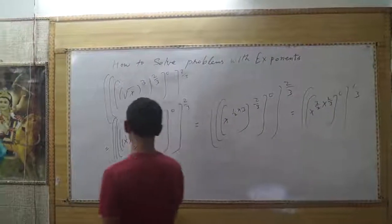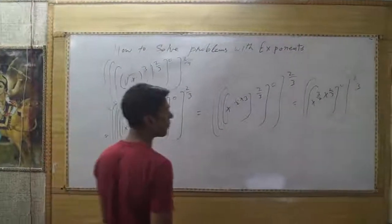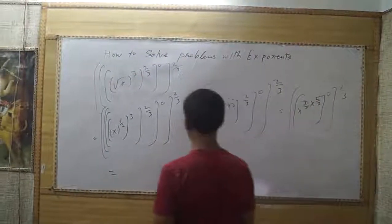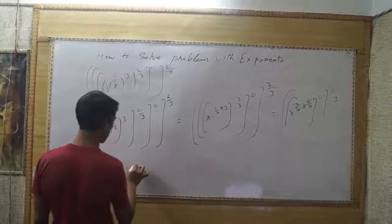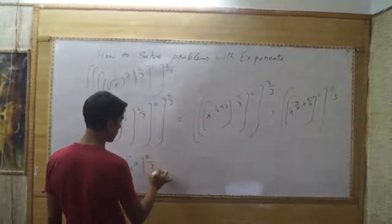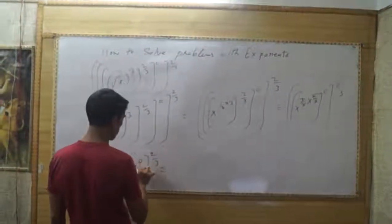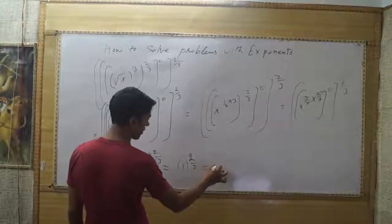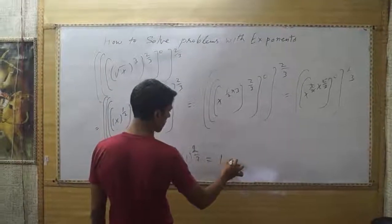Now, next, this will be cut. And x power 0. And x power 2 divided by 3. And x power 0 means 1, and its value is 1.